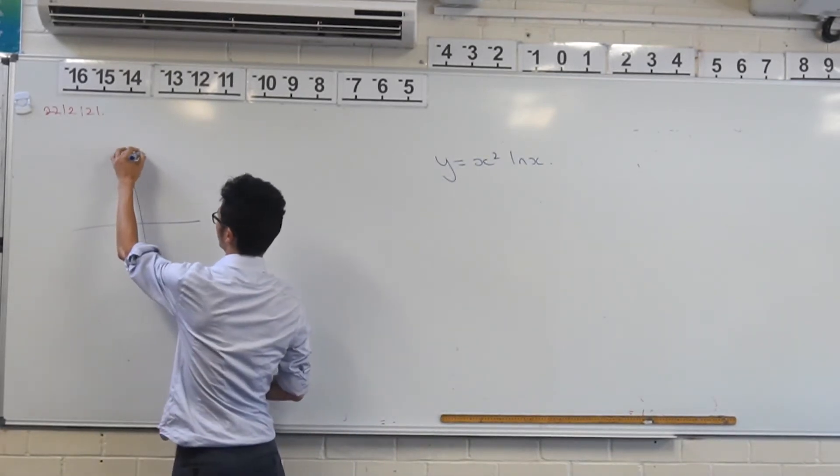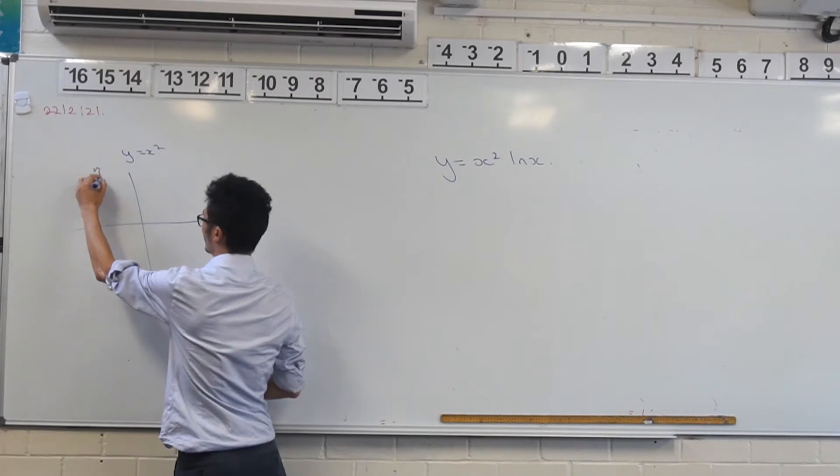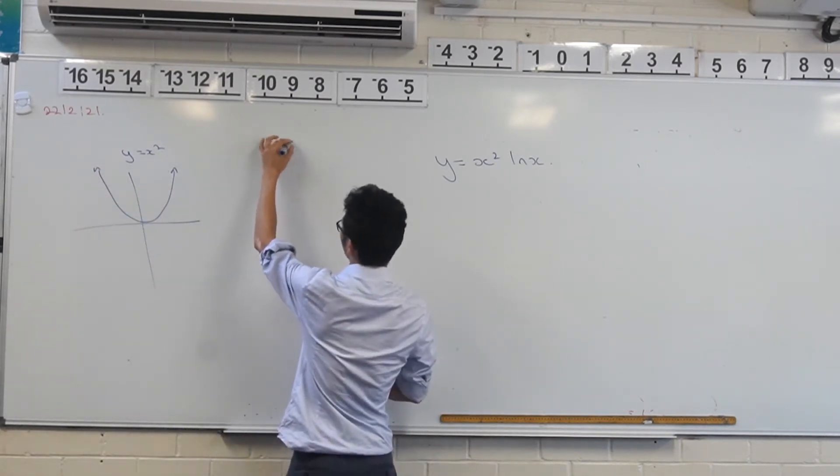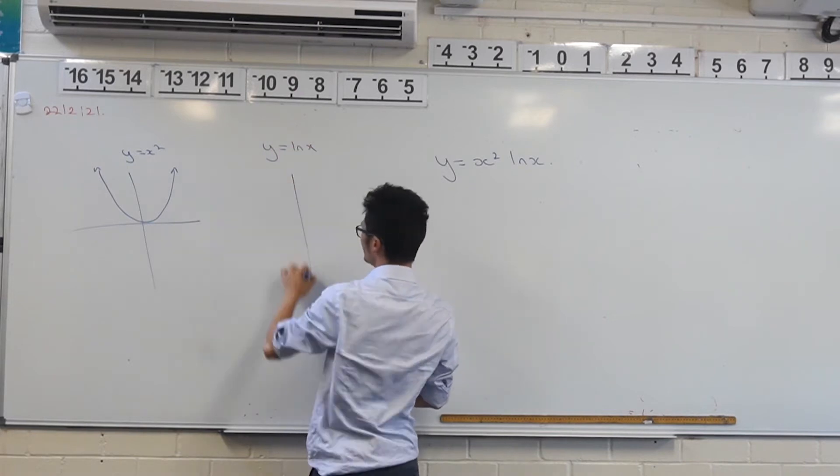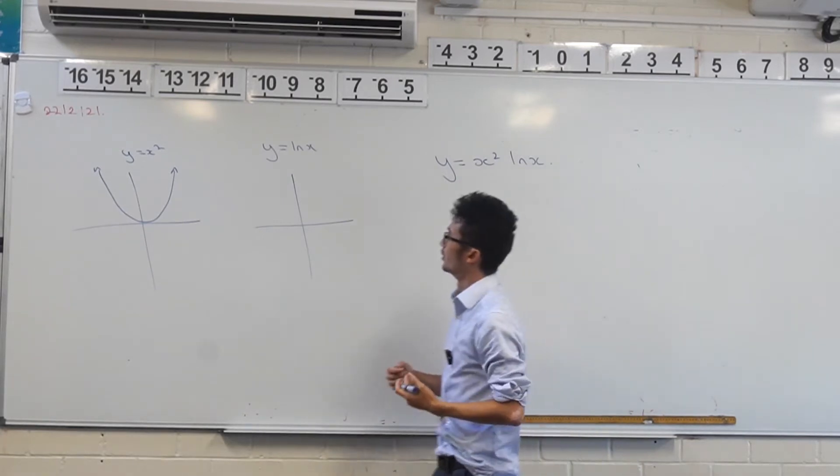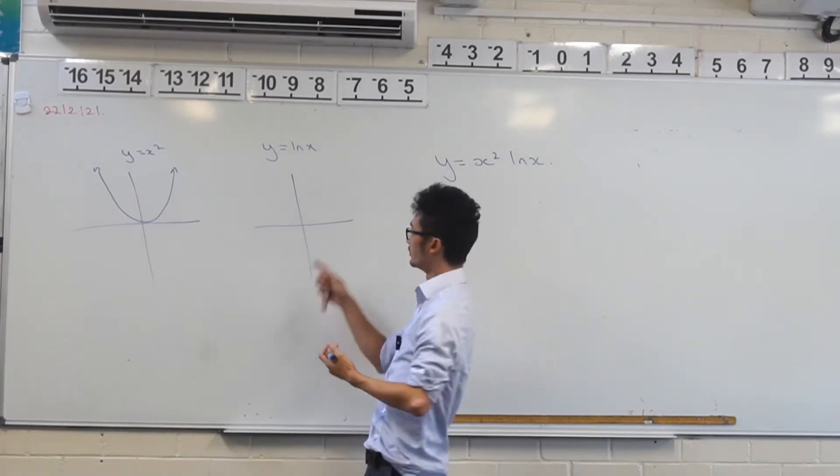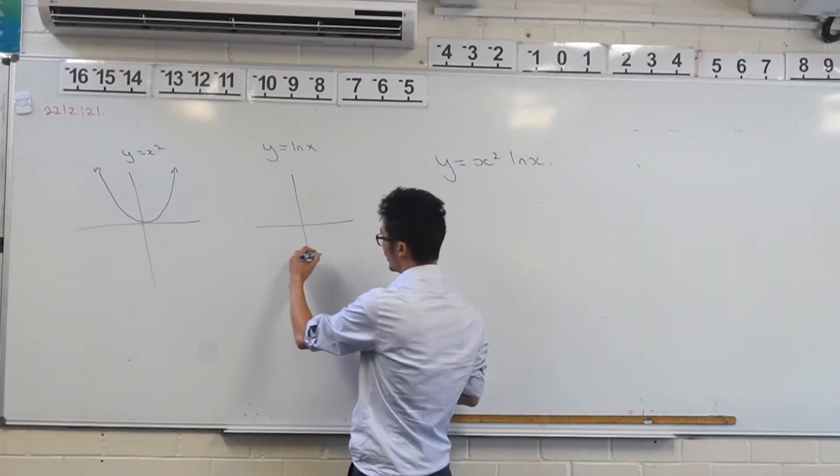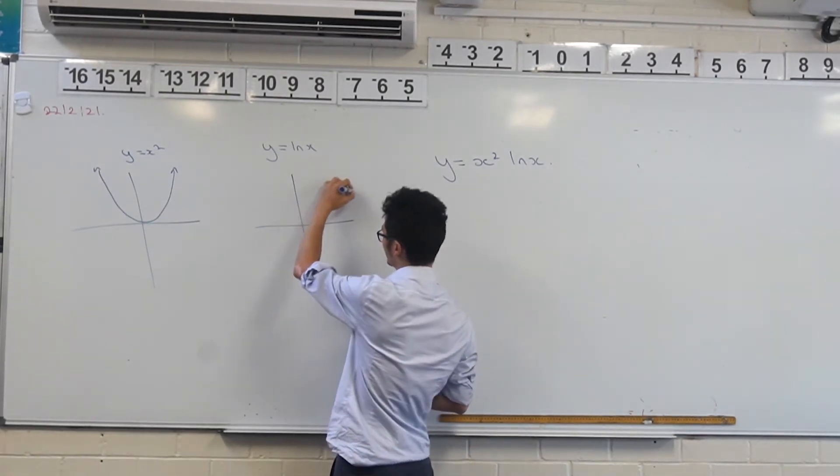So y equals x squared, that's easy enough, that's a parabola. Y equals ln x, a little bit trickier. If you're not too familiar with it, it looks something like this. Something to consider when you look at log graphs is that you can never take the log of a negative value. So on the left side of your graph, you won't have any negative values, it would just look something like this.